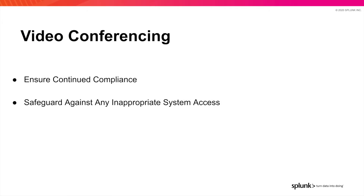As employees shift to working from home, companies are experiencing increased load and even outages across remote access and collaboration tools. With a growing reliance on communication and collaboration solutions like Slack, the dreaded outage is more painful than ever. Companies who want to maintain employee productivity and consistent service delivery against committed SLAs must be able to monitor service performance, investigate incidents, and correlate that data to cloud service data. Remote work insights makes this easy with Slack collaboration monitoring, allowing organizations to ensure continued compliance and safeguard against any inappropriate system access.